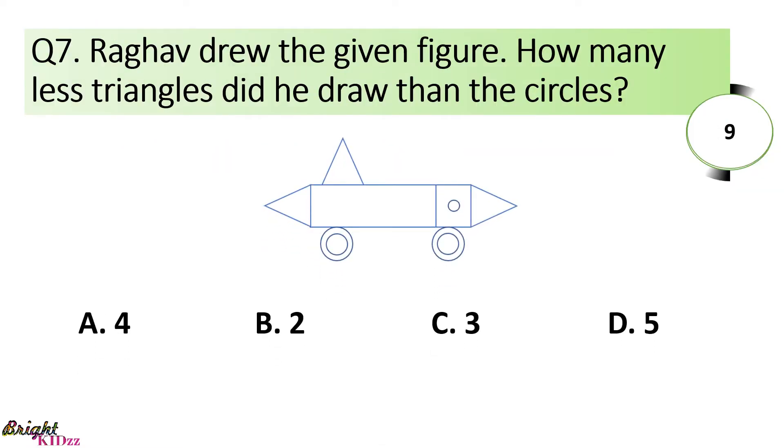Raghav drew the given figure. How many less triangles did he draw than the circle? There are total of 5 circles: 1, 2, 3, 4, 5 and 3 triangles. So, 5 minus 3 is equal to 2. There are 2 less triangles.